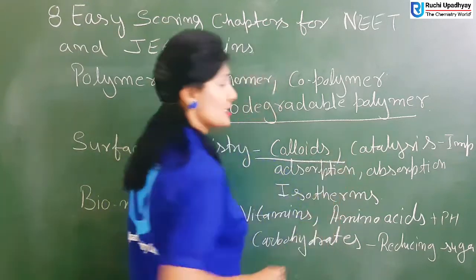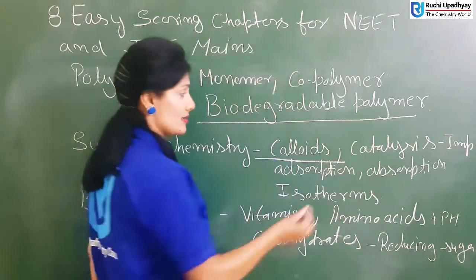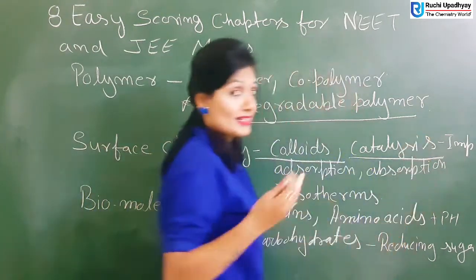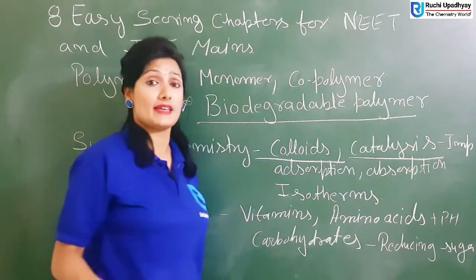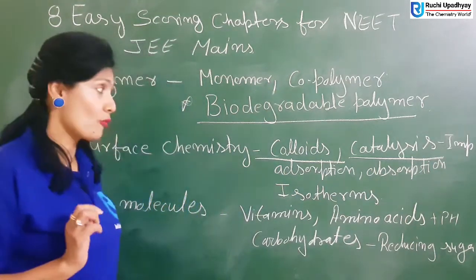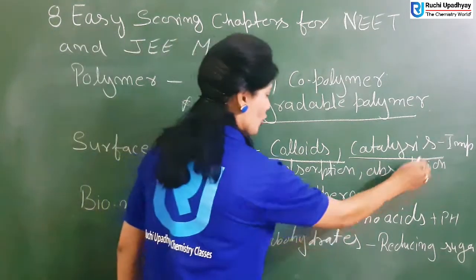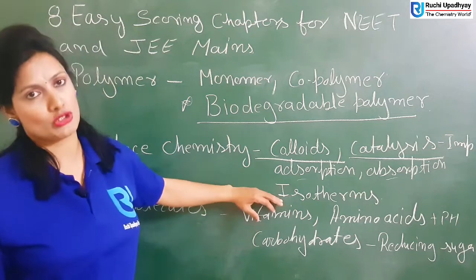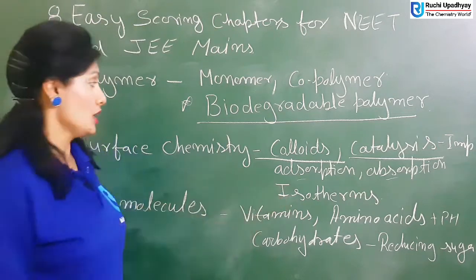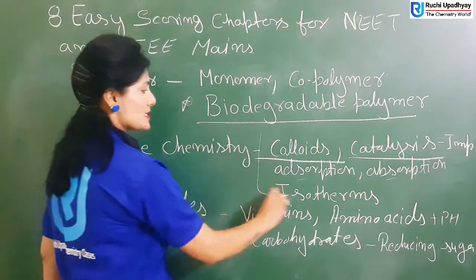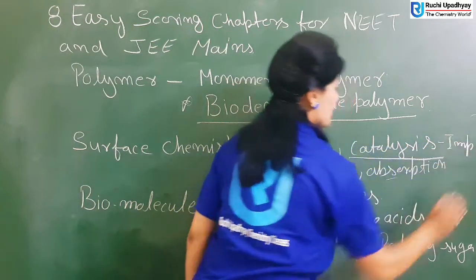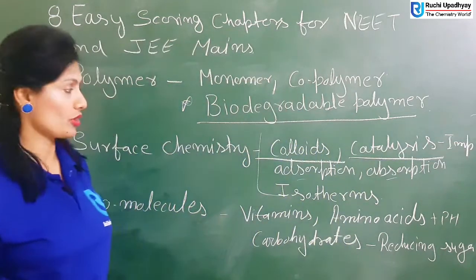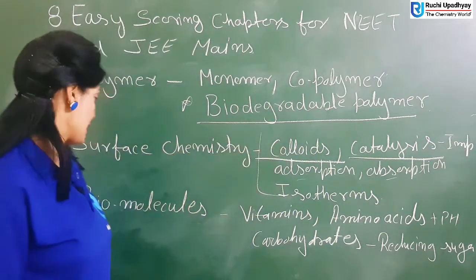When you are talking about surface chemistry, you have to study colloids. Next, you have to study catalysis — topics linked to catalysis. You also have to study adsorption and isotherms. These are the important topics for surface chemistry and they are needed.